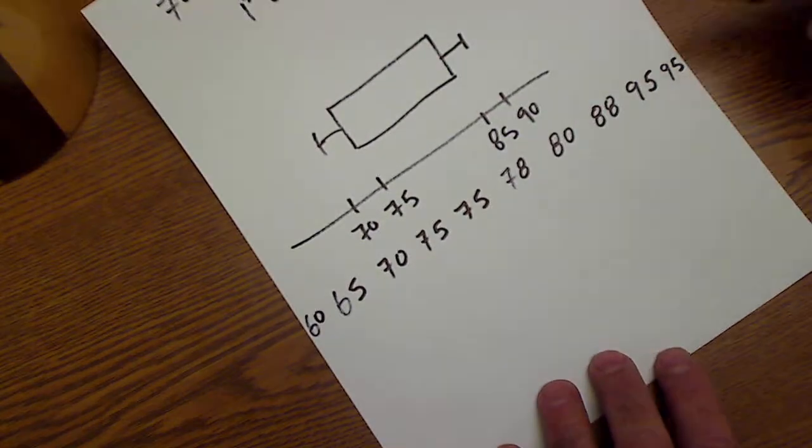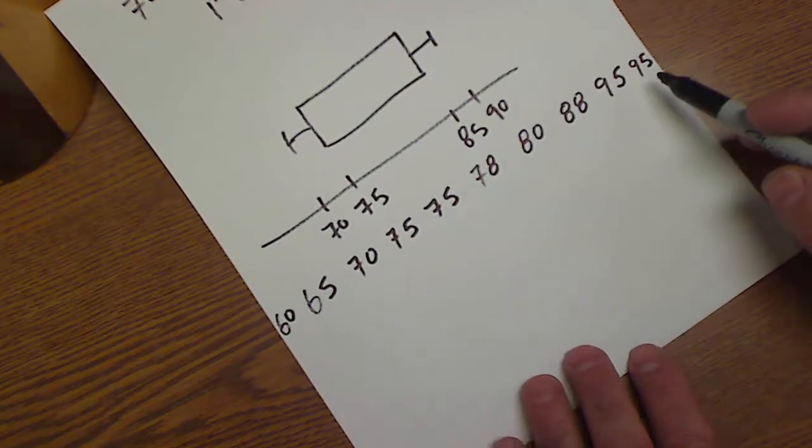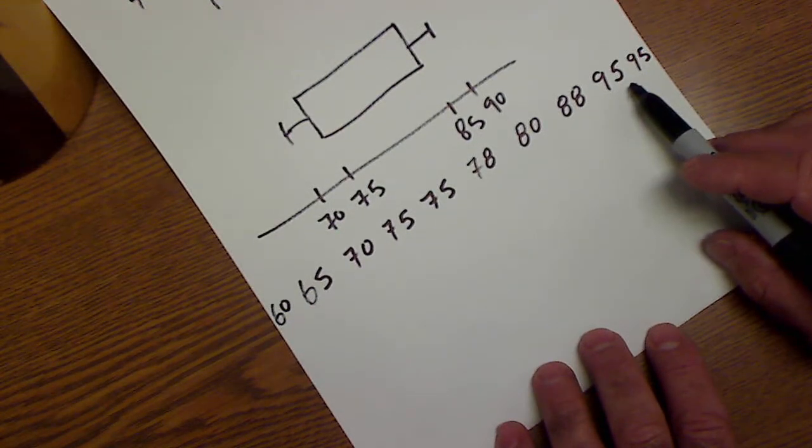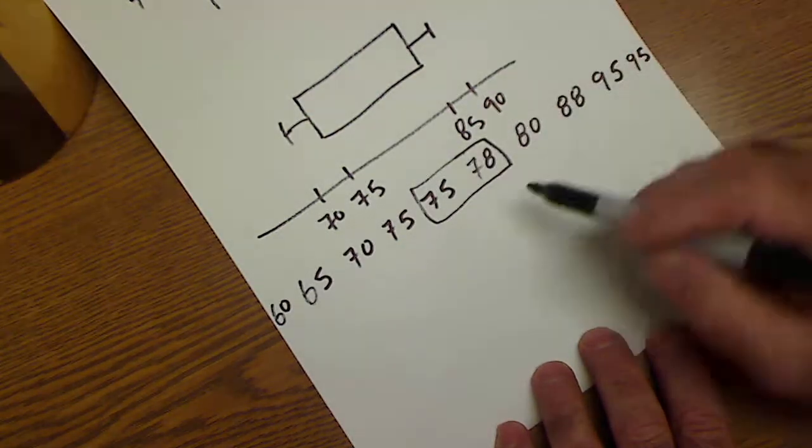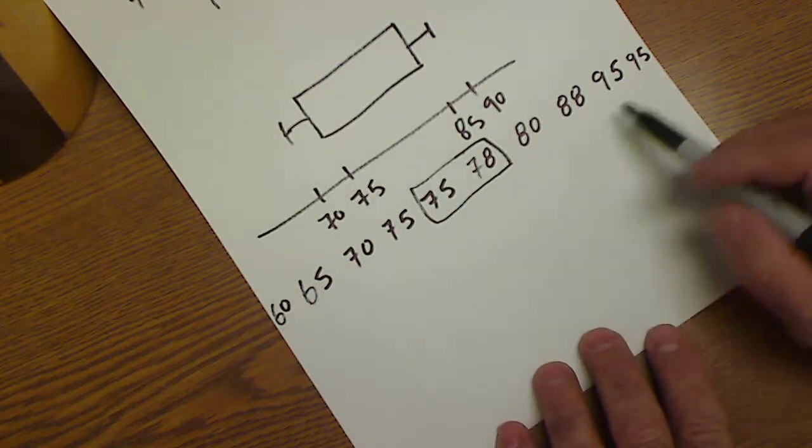However, when you have more values like an even number, one, two, three, four, five, six, seven, eight, nine, ten. When I have ten values, the middle value will be the middle two. So right here is my middle two values. I have four values below that, four values above it.